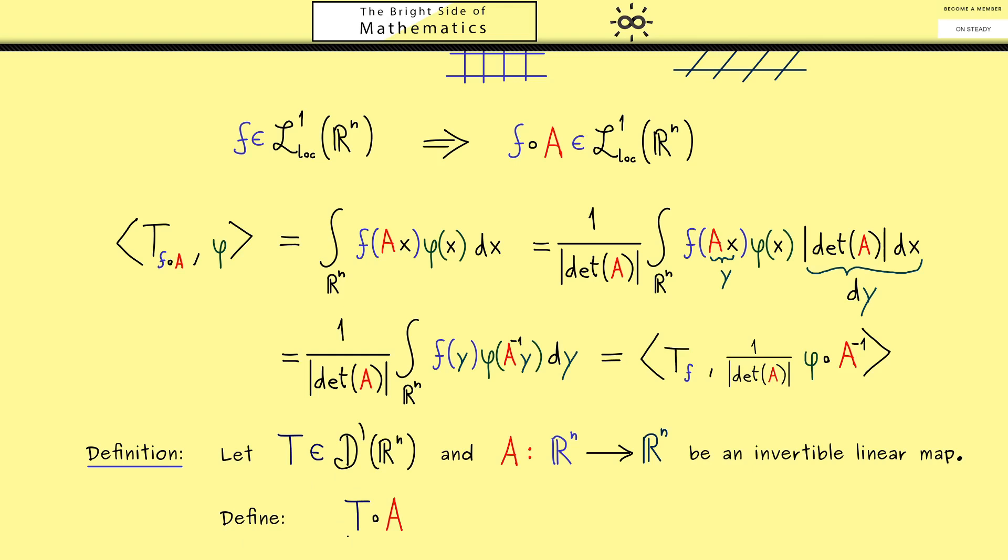And of course you know we define it by using test functions. And now in the spirit from above this should be the same as applying the distribution T to this test function. Ok here you should see without any problems this defines a new distribution T after A. Hence this is the distribution after the coordinate transformation A.